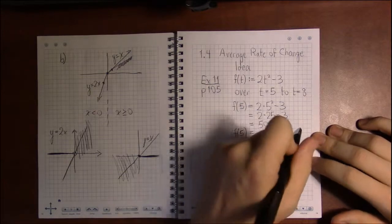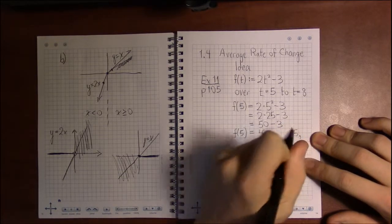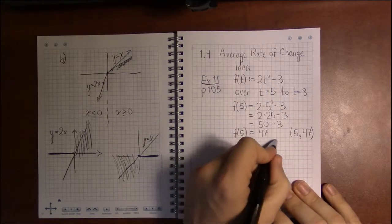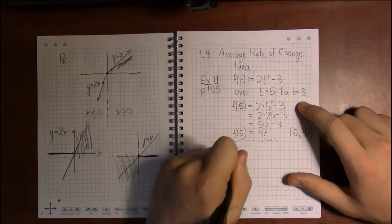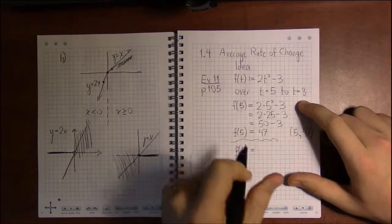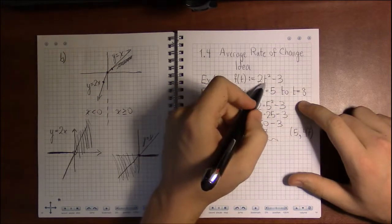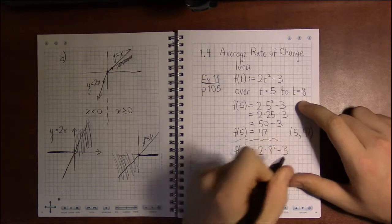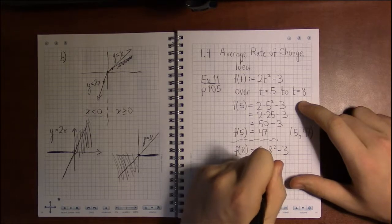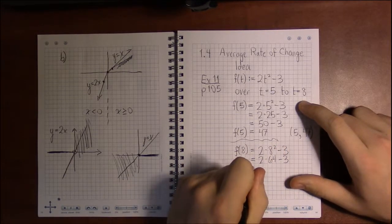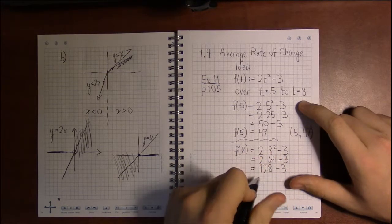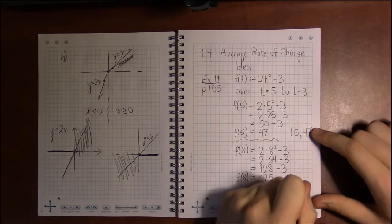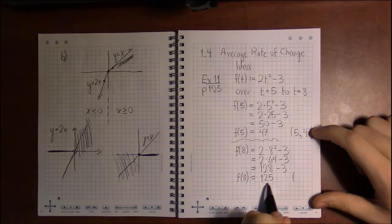Now we want to do the same thing but with t equals 8. So f of 8 is going to be replacing t with 8, so this is now 2 times 8 squared minus 3. We get exponents first, 2 times 64 minus 3, then multiplication 128 minus 3, and finally we get 125. So f of 8 is 125, which corresponds to the point 8 comma 125.